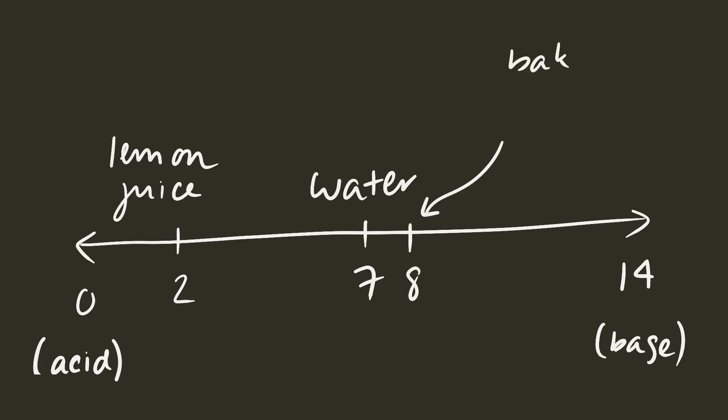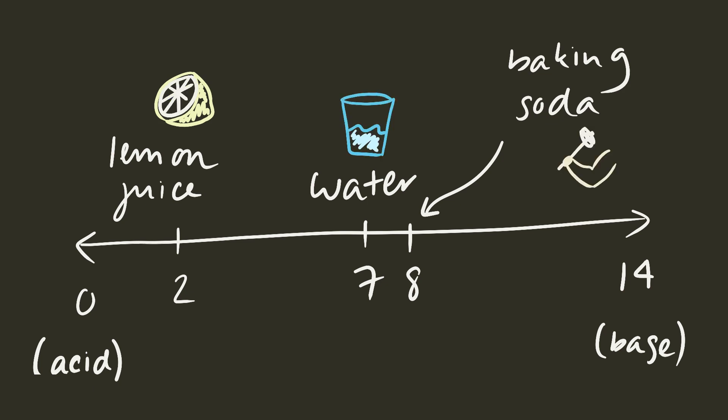A quick explanation of the pH scale. The pH scale is a measure of the acidity and basicity of a substance. It's measured from 0 to 14, usually. Let's ignore super acids and superbases for this video. The lower the pH, the more acidic something is. Conversely, the higher the pH, the more basic something is. Something that registers a 7, like pure water, is considered neutral. Lemon juice has a pH of about 2, and baking soda has a pH of about 8.